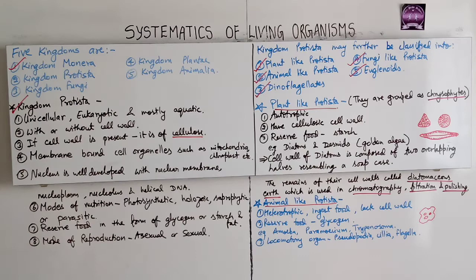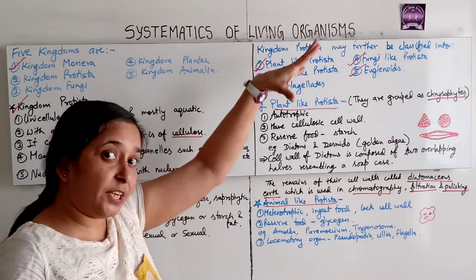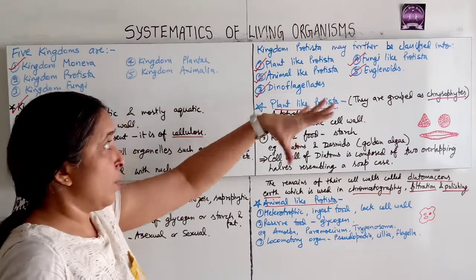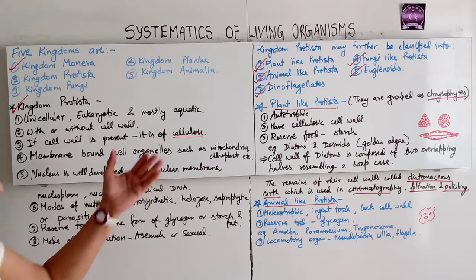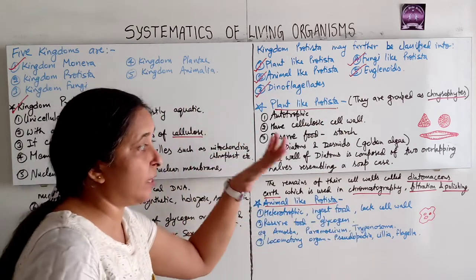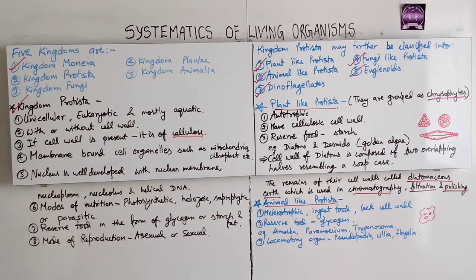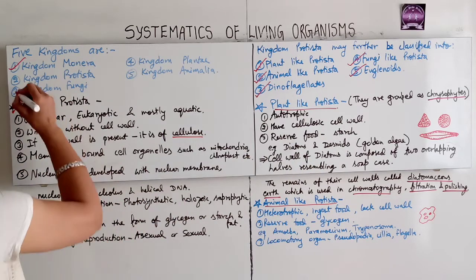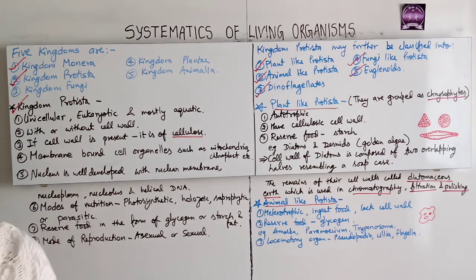So we have finished the general characteristics of Kingdom Protista. Protista is further divided into five groups: plant-like, animal-like, dinoflagellates, fungi-like, and euglenoids. We have studied the characteristics of each with examples. Kingdom Protista is now complete.